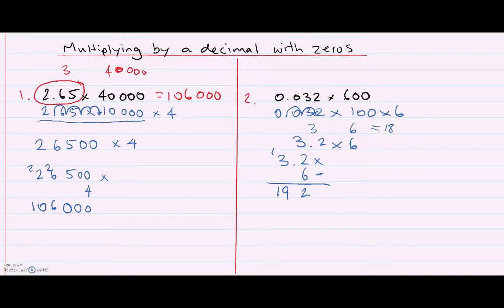I need to make sure that my answer has one number after the decimal point like I did in my last video. So my decimal point will go between the 9 and the 2, making my answer 19.2, which is a little bit more than 18, which is what we expected.